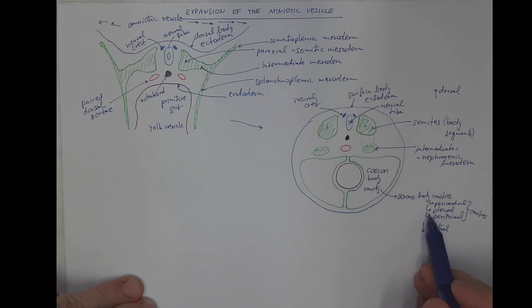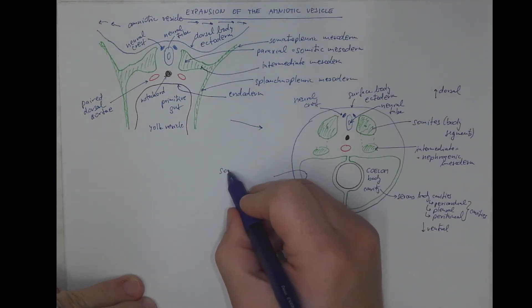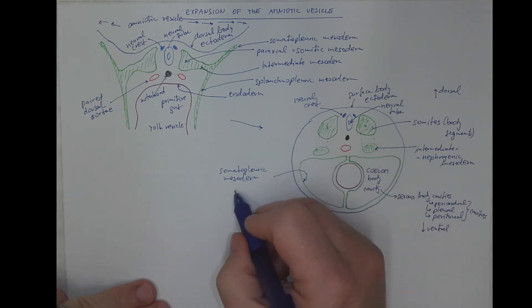Originally, these three cavities, you know from anatomy, are derived from a single body cavity called coelom, which is lined with the somatopleuric mesoderm.